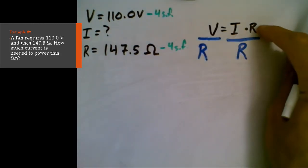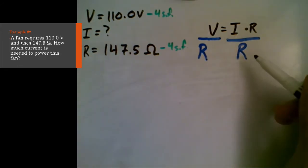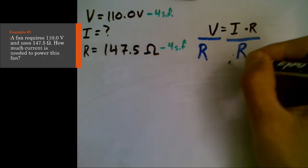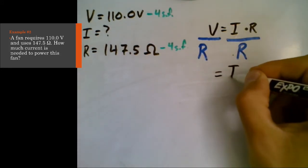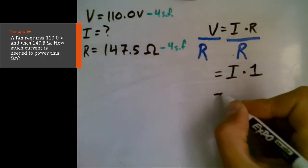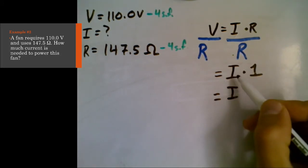Now, whenever you have something divided by itself, that actually is always one. You know, one divided by one is one, two divided by two is one, 10 divided by 10 is one, a million divided by a million is one, R divided by R is one. And what's anything multiplied by one? Well, it's just itself. So 10 multiplied by one is 10, I multiplied by one is I.